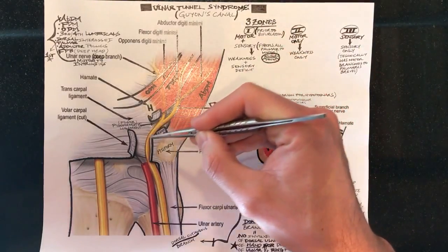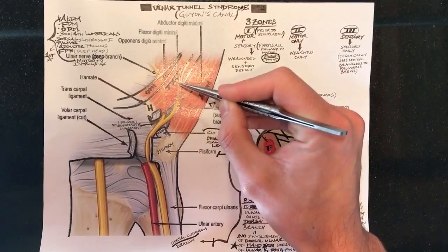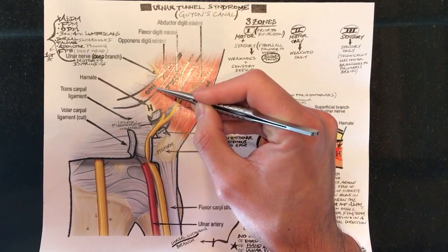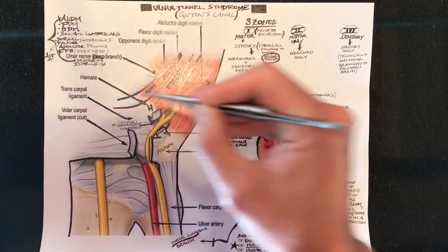So again we saw the branch, the deep branch go underneath the flexor digiti minimi and underneath the opponens digiti minimi and it continues to wrap around this way and innervates all these muscles.